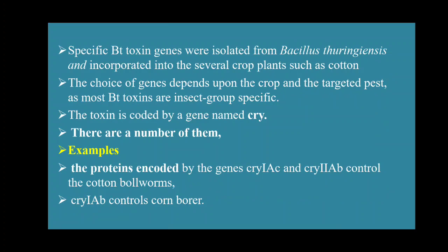If we insert the gene which is responsible for producing this type of protein into the cotton plant, it will kill the insect and protect the plant. The choice of gene depends upon the crop and the target insect, as most Bt toxins are insect-group specific.